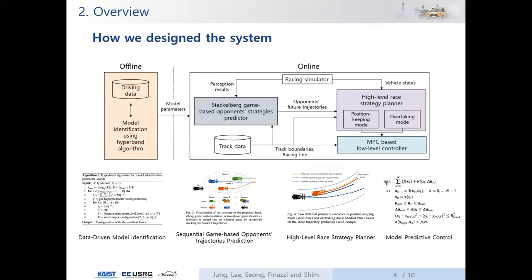Here is an overview of our head-to-head autonomous racing system. In the offline phase, we identified the parameters of the non-linear dynamic vehicle model, especially the tire model, through a data-driven approach. These parameters are used in model-based algorithms in our online phase. Our system consists of three modules: an opponent's future trajectory predictor based on the sequential game concept, a high-level race strategy planner, and a non-linear model predictive controller.